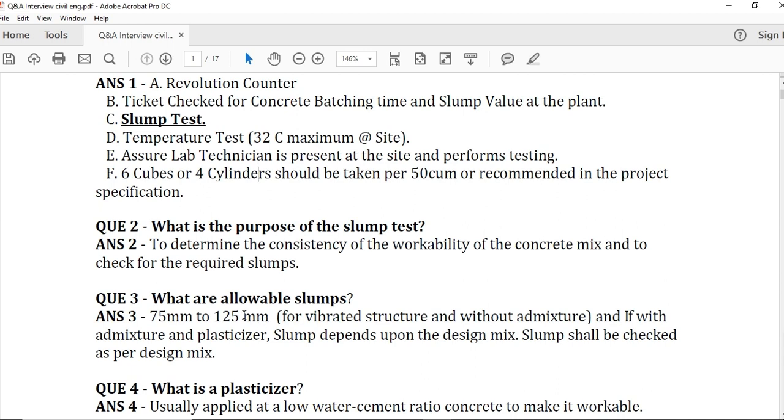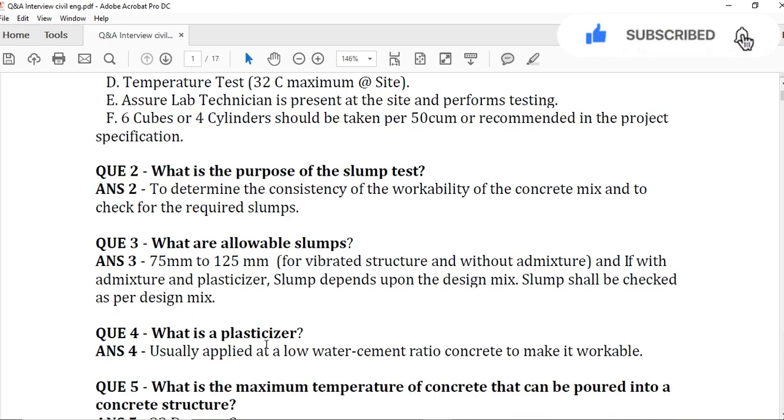The fourth question is: What is a plasticizer? Usually applied at low water-cement ratio concrete to make it workable. Like after performing the slump test, when the value is from 75 to 80, it means that the concrete workability is low and it's hard to place the concrete or to cast the concrete.